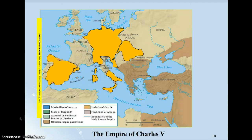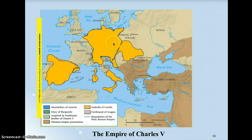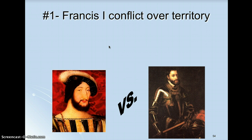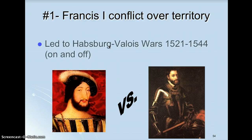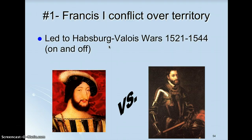His problems — four problems. When you think about them, think west, then east, then south, then internal problems. His first problem comes from France: Francis the First, and their conflict over land, because that's what most monarchs conflict over. It will lead to the Habsburg-Valois conflicts.